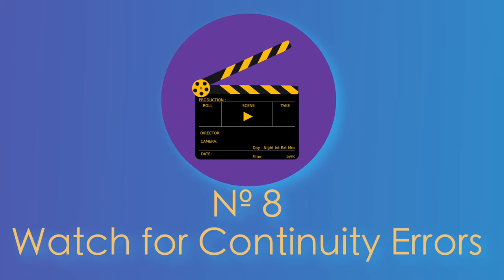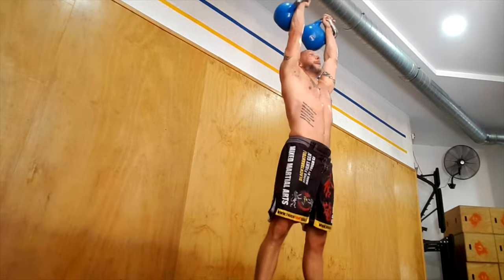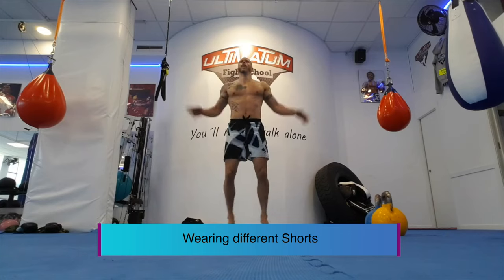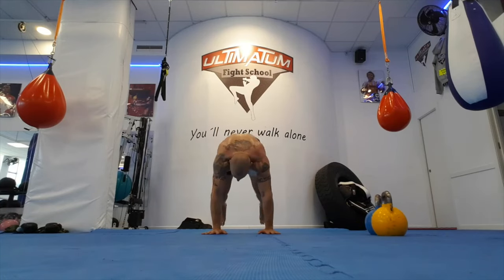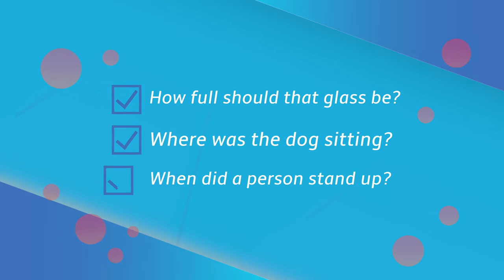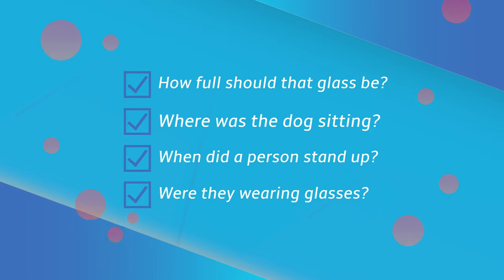Number eight: watch out for continuity errors. Continuity is a term for something that was not the same in a previous edit — this is most important during filming, but even though an error has been filmed, you should watch out for inconsistencies when editing. You could avoid those shots altogether, or hide the error in some way — that's another use for b-roll. How full was the glass? Where was the dog sitting? When did that person stand up? Was that person wearing glasses? Paying attention to continuity helps the viewer believe the story you're telling.